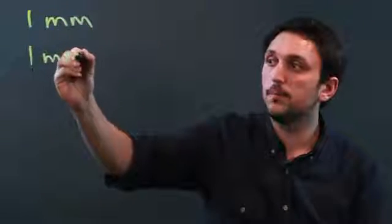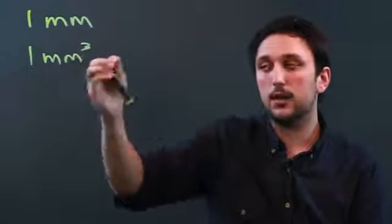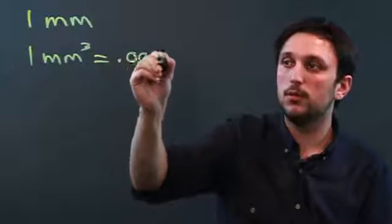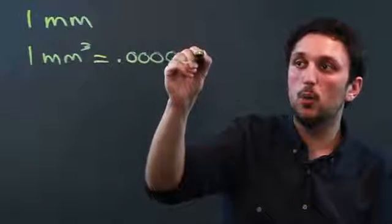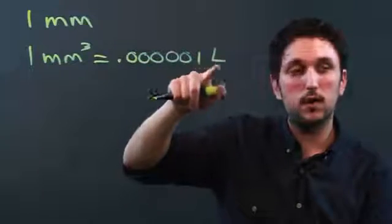if we say one millimeter cubed or a cubic millimeter, that is a measure of volume, and one cubic millimeter equals .00001 liter, or one millionth of a liter.